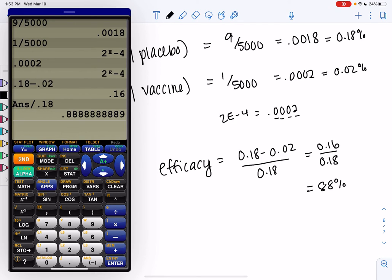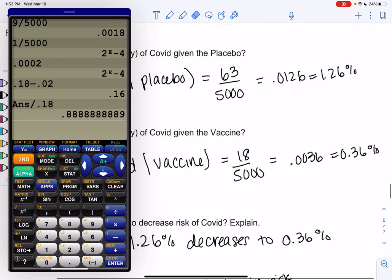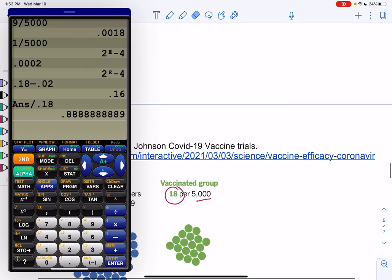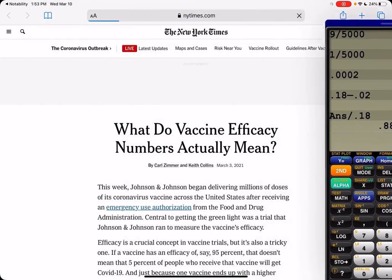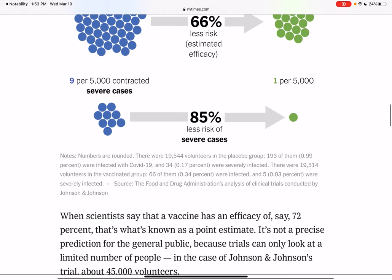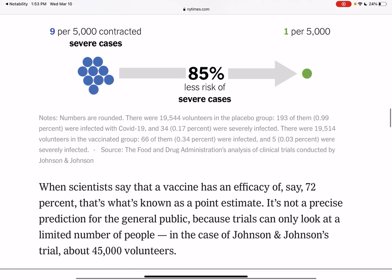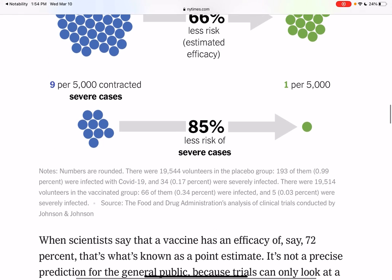And again, remember I said the numbers were rounded, so it's not exactly matching. And that's just for simplicity of the article, they rounded the numbers. If you look a little bit more closely, you can find more detailed numbers kind of hidden at the bottom of the article. So they make it out of 5,000 just to make the article easier to follow, but if you look really closely, you can see the numbers. So 193 were infected with COVID, and then 34 were severely infected. And notice the total is a lot bigger, 19,544. But oftentimes in articles, they'll round them to make the article easier to read.